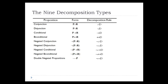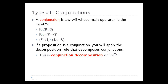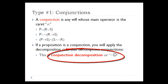We'll look at each one of these types one by one and talk about patterns. What we won't do in this lesson is talk about exactly how to use these rules for trees. A conjunction is any well-formed formula whose main operator is the caret. Looking at three examples, in each case the main operator is the caret, so we can classify those formulas as conjunctions. Once you've classified a formula as a conjunction, there is one rule that applies — conjunction decomposition. It only applies to conjunctions, and whenever you see a conjunction, you should apply conjunction decomposition.